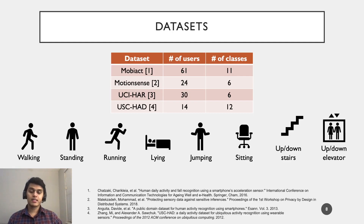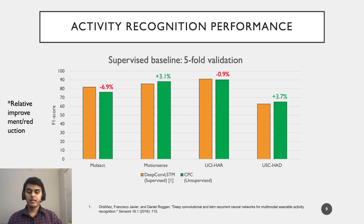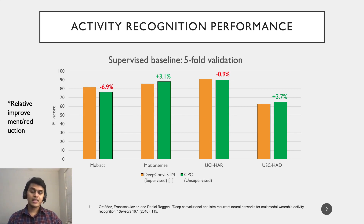CPC is benchmarked on four datasets including MobiAct, MotionSense, UCI-HAR, and USC-HAR, covering mostly locomotion-style activities such as walking, sitting, running, etc. We compare the activity recognition performance of CPC against a supervised learning baseline, DeepConvLSTM. CPC, which is unsupervised, outperforms DeepConvLSTM on two out of four benchmark datasets, showing improvements of over 3% in each case, even though CPC has no access to label information. Furthermore, as only the classifier is updated with labels for CPC, it uses a fraction of the trainable parameters compared to DeepConvLSTM.